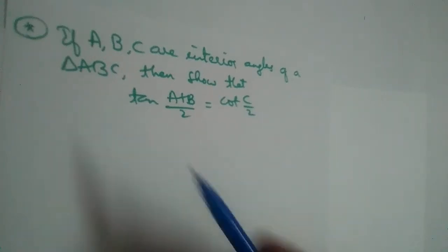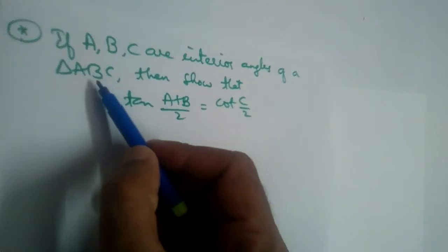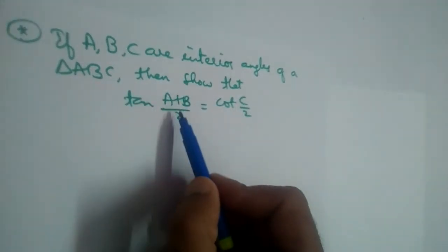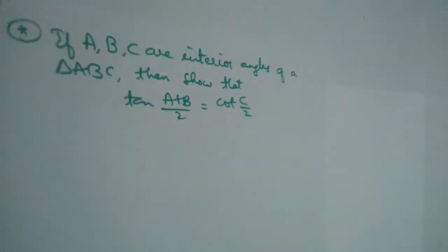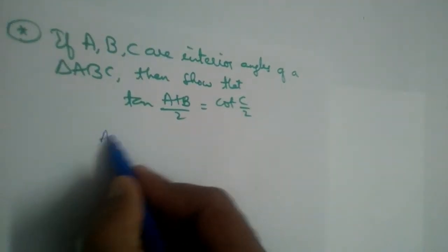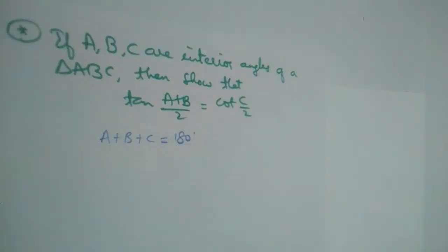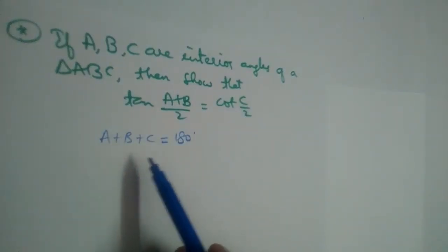Let us solve this problem. If ABC are interior angles of a triangle ABC, then show that tan((A+B)/2) is equal to cot(C/2). ABC are interior angles of a triangle, that means A plus B plus C should be equal to 180 degrees. Sum of angles in a triangle is equal to 180.